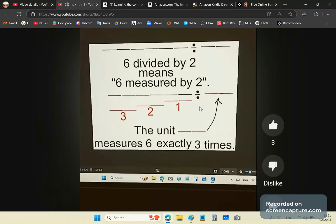Six divided by two means six measured by two, not six equally distributed by two, because that doesn't apply in all other circumstances. But what I'm telling you here applies in any circumstance. Six measured by two. What it means is you're using this two as a unit.